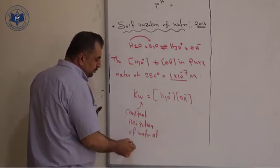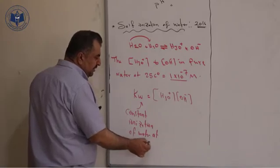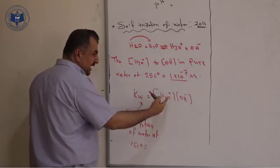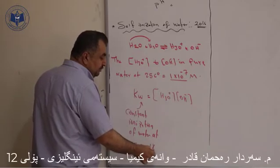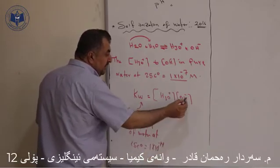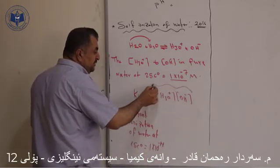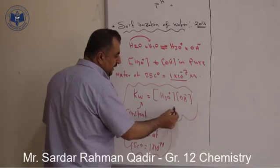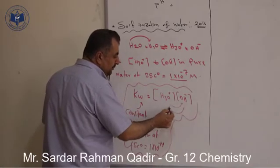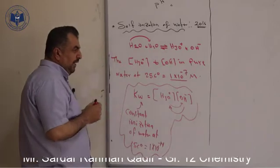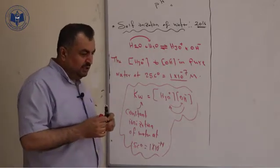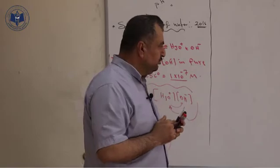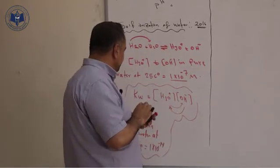At 25 degrees Celsius, each one equals 10 to the power negative 7. After multiplying, it becomes 1 times 10 to the power negative 14. This rule is used to convert hydronium to hydroxide and hydroxide to hydronium. KW equals hydronium times hydroxide, and is always used for converting between them.